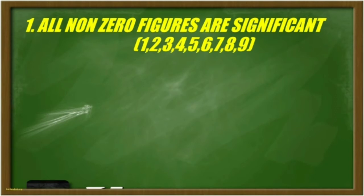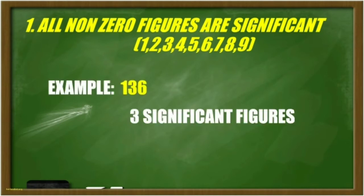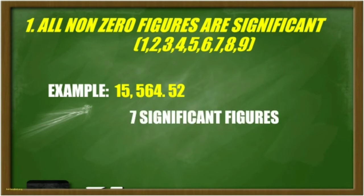In rule number 1, all non-zero figures are significant. Numbers from 1 to 9 are all significant. For example, in 136, there are 3 significant figures, since 1, 3, and 6 are all non-zero digits. Another example: in 15564.52, there are 7 significant figures, since all the digits are all non-zero.